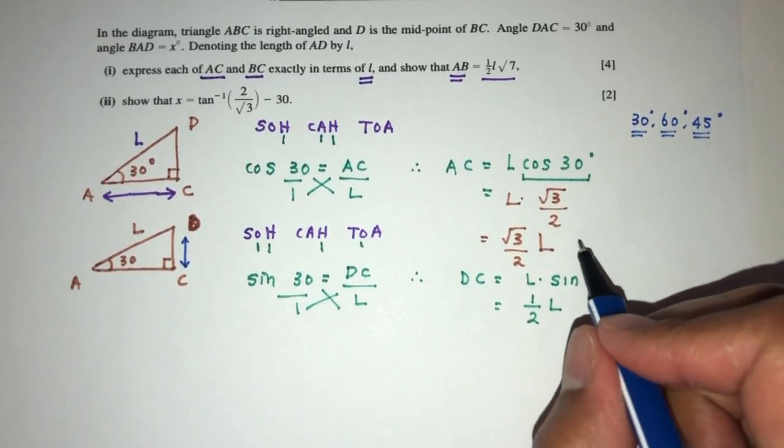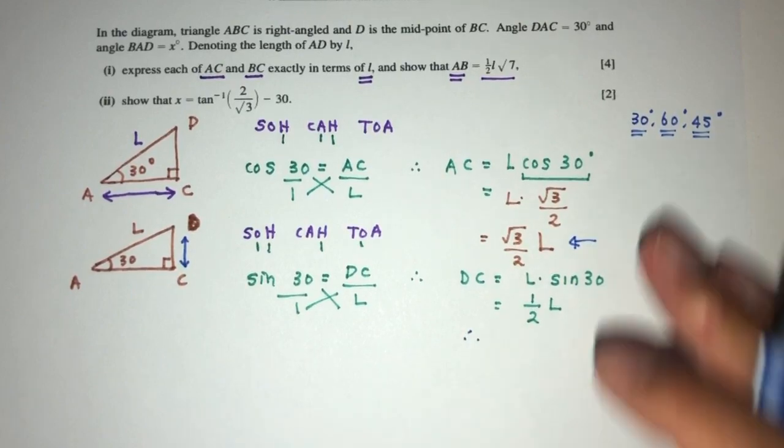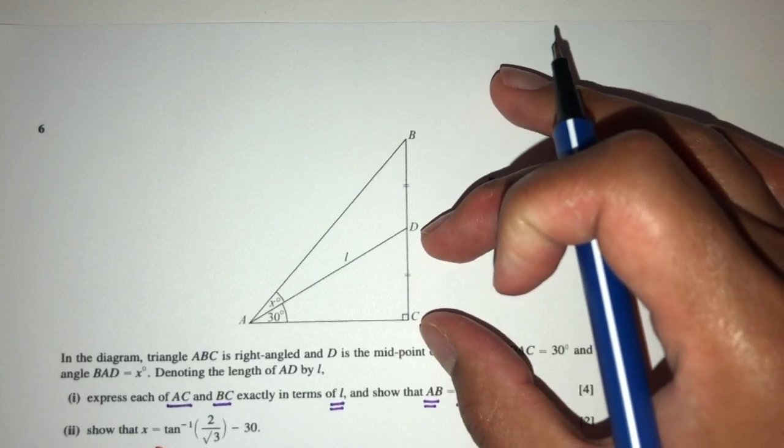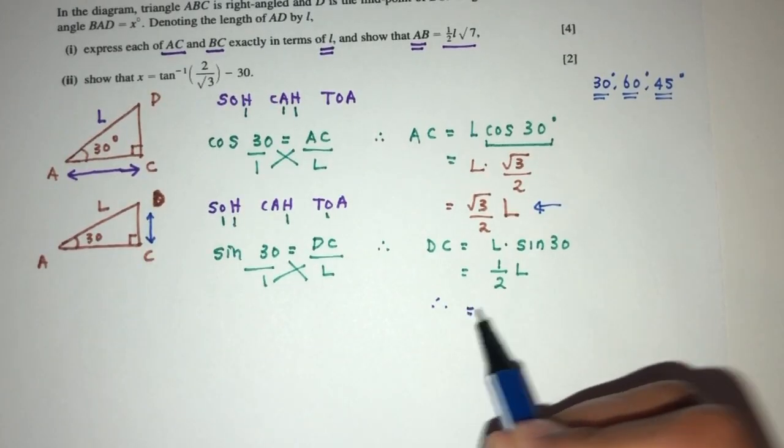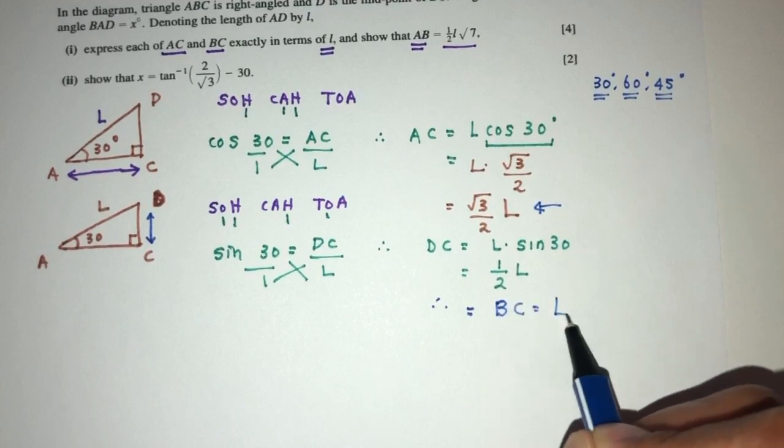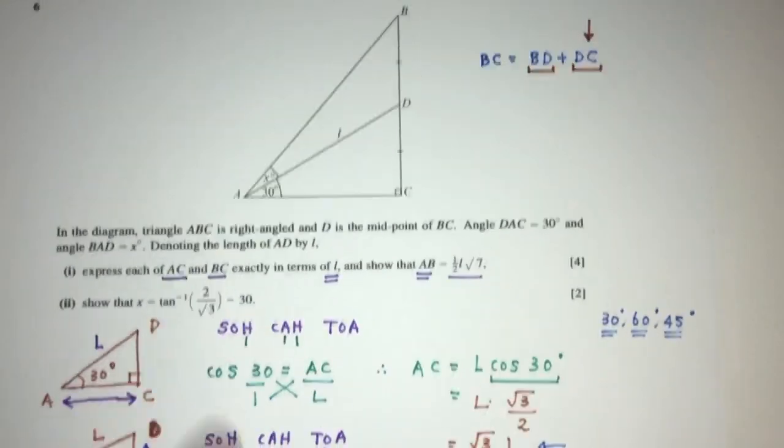Here we have found the value of AC and DC. We realize that DC is just half of BC, so we multiply by 2. That gives you BC equals L. That is part one and two of the question.